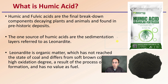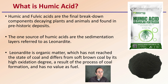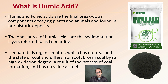First off, what is humic acid? Humic and fulvic acids are the final breakdown components of decaying plants and animals found in prehistoric deposits. One source of humic acids is the sedimentation of layers found in leonardite — a fine, powdered, black, granulated form. This organic matter has not reached the state of coal, but it has some properties or at least feels similar to coal.